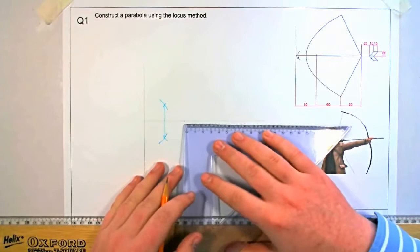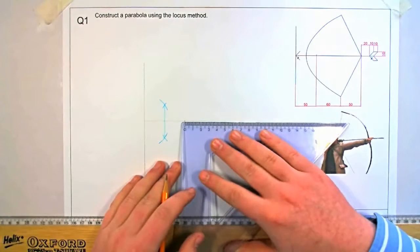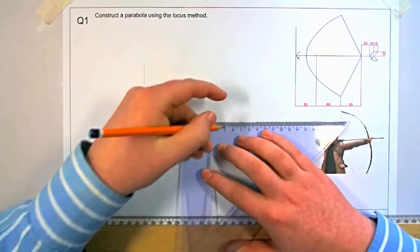From our drawing we know that the parabola projects back another 60mm beyond the focal point.